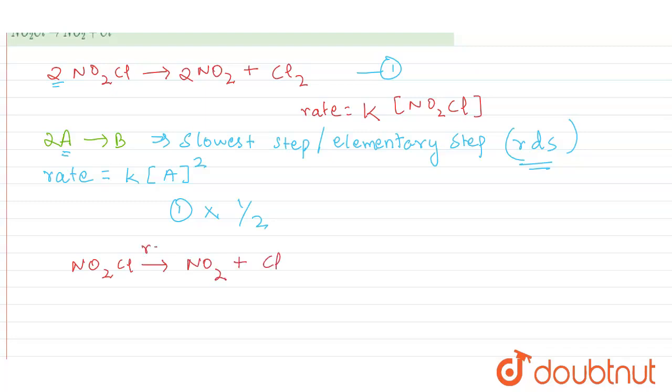Now, if this is the RDS, then only it is supposed to give the rate. So this is the rate determining step or the elementary step. So this is the slowest step. And henceforth,